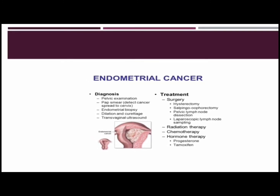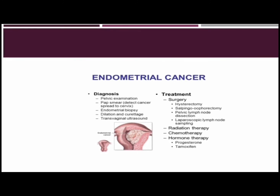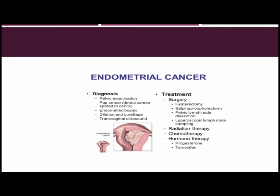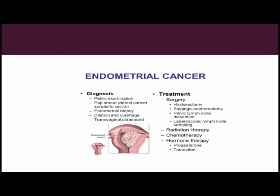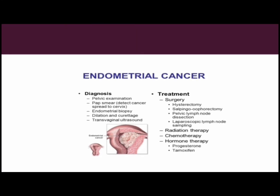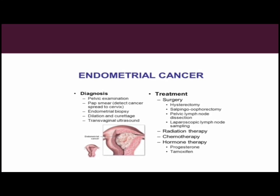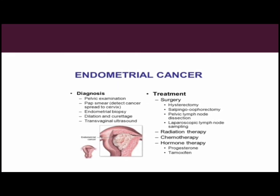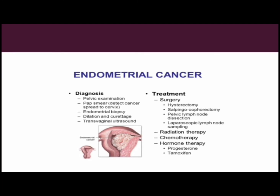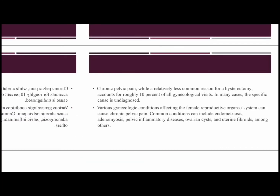Surgical treatments for endometrial cancer include hysterectomy, salpingo-oophorectomy, pelvic lymph node dissection, and laparoscopic lymph node sampling. Therapeutic treatments include radiation therapy, chemotherapy, and hormone therapy.